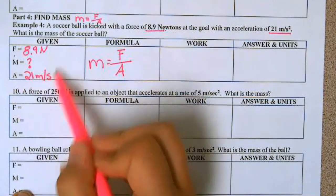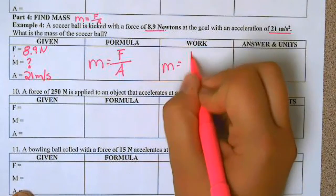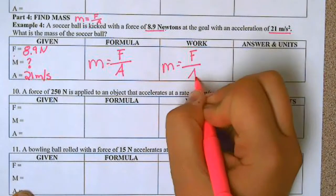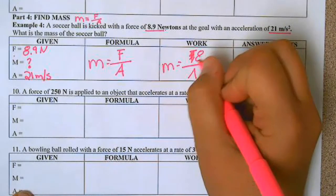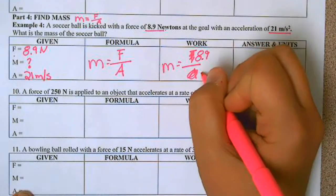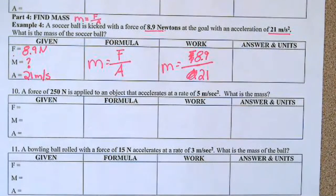So we're going to take our numbers and plug them into our formula. 8.9 divided by 21.